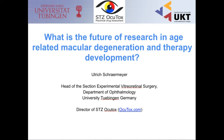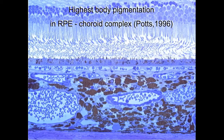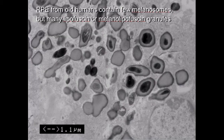What is the future of research in age-related macular degeneration and therapy development? Here we see sections through the choroid and the RPE from an eye. You can see Bruch's membrane, the choriocapillaries, and what becomes evident is that we have very high pigmentation in the choroid, consisting of melanocytes. Also in the RPE we have many melanin granules, and in this talk we will focus on pigmentation in the retinal pigment epithelium.